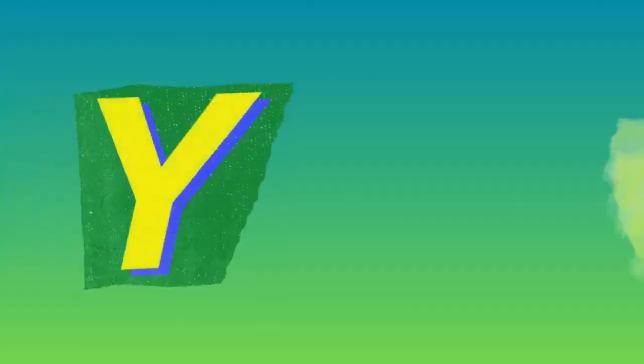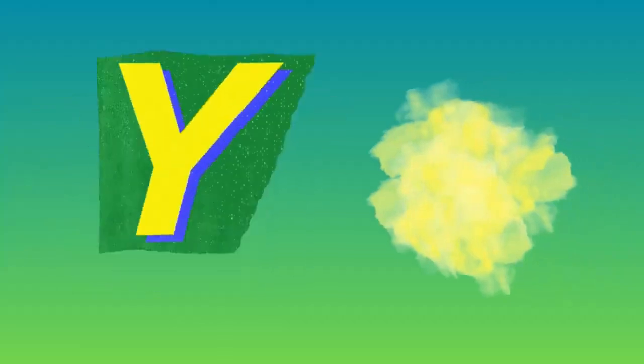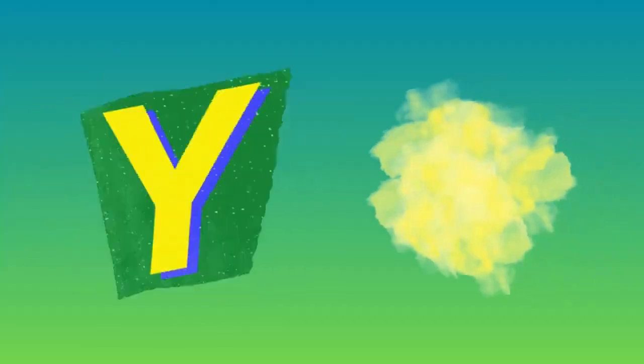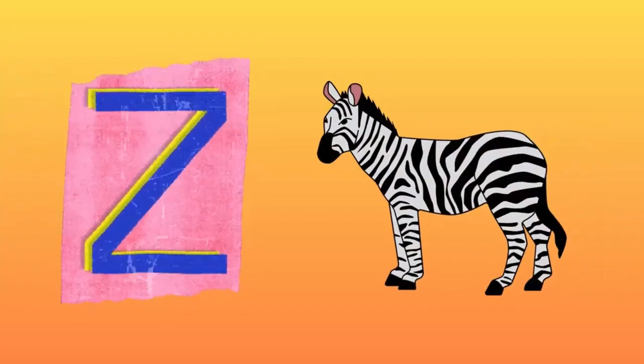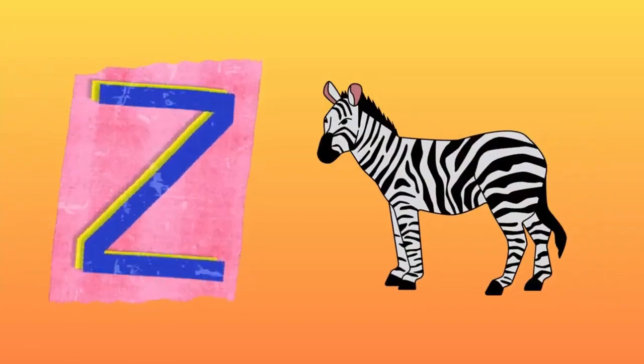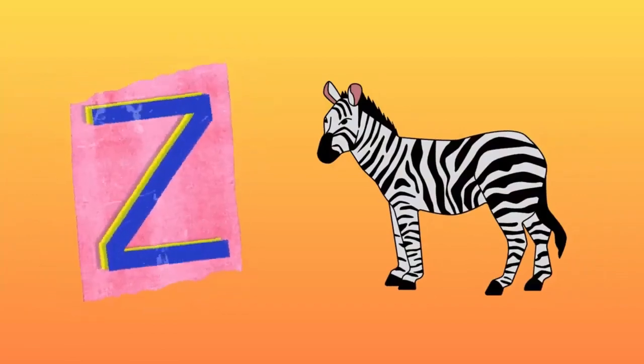Y is for yellow, y-y-yellow. Z is for zebra, z-z-zebra.